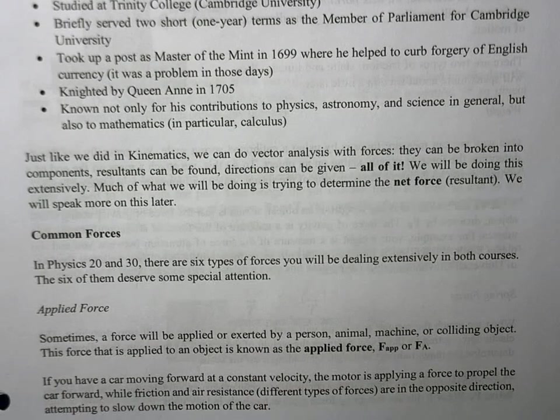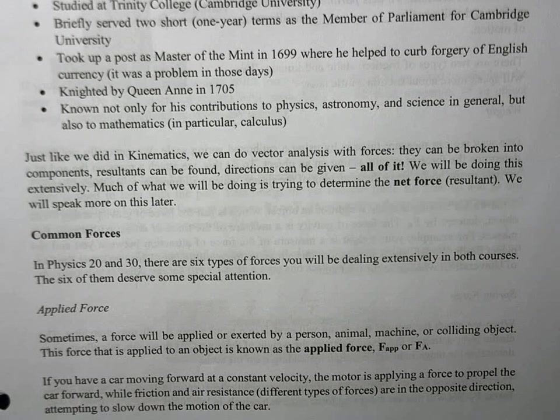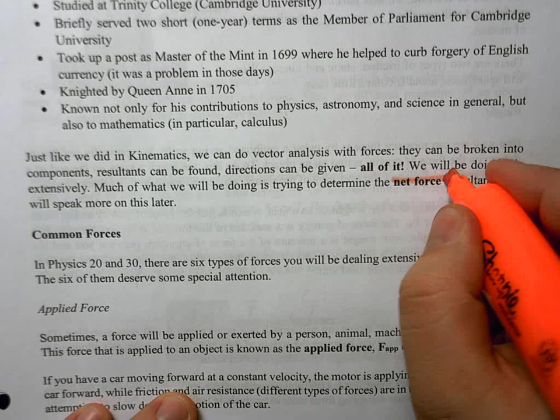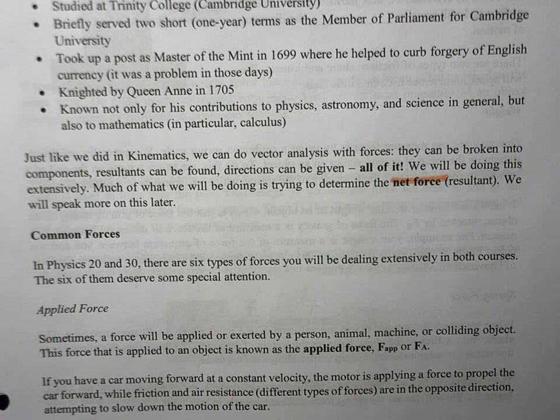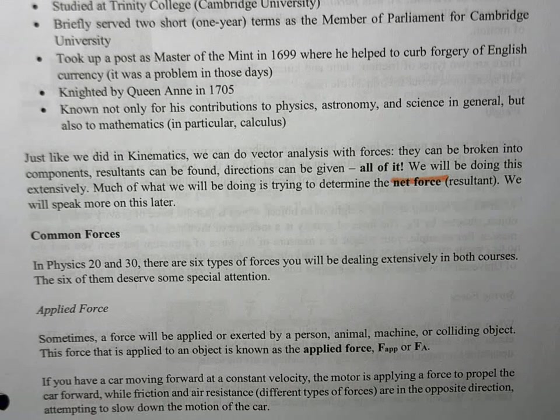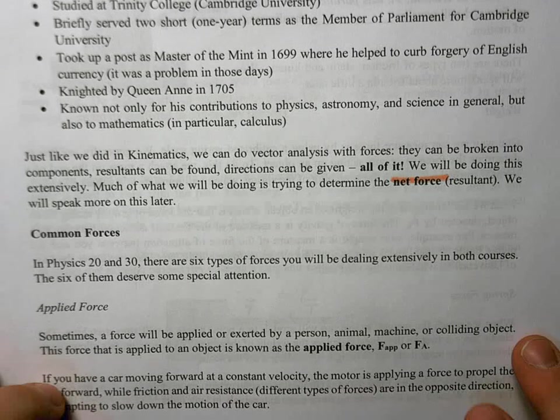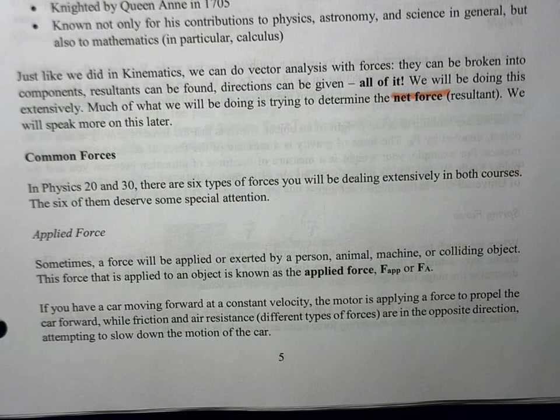With kinematics, we can do vector analysis - 2D vectors, break things into components, add them, find the resultant. In kinematics, a lot of our resultants dealt with velocities and displacements. The resultant we're going to be looking at a lot in this unit is called the net force. We're going to speak to that later. We're going to save the 2D stuff for near the end of this unit. For now, we're going to focus more on theory and foundation.